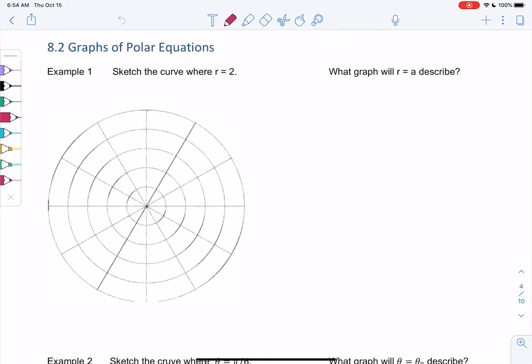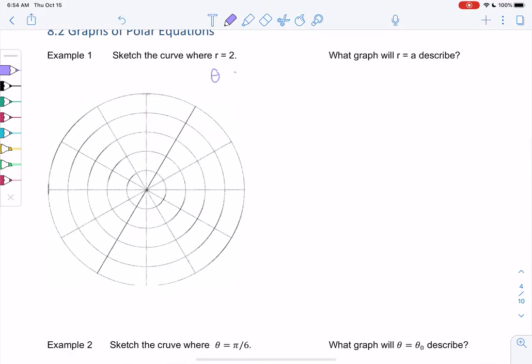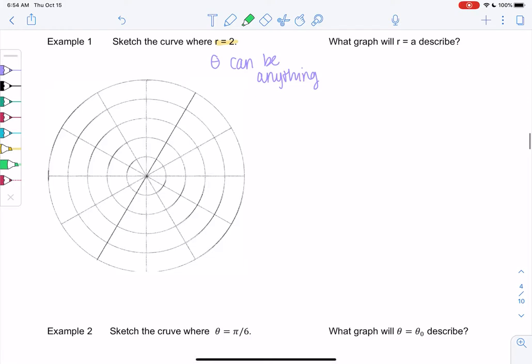Example 1, sketch the curve where r equals 2. This is kind of like when we have y equals a number, right? x could be anything, so in this case theta can be anything. Any angle works. We just specifically have to go 2 from the origin. So 1, 2. It just makes a circle with radius 2.